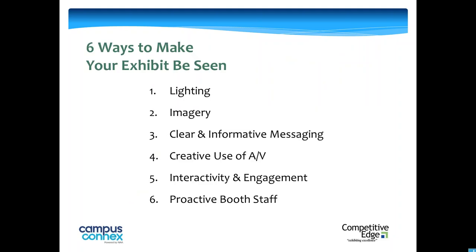So let's talk about getting seen — six ways to make sure your exhibit gets seen. Number one: light it up. Number two: pictures — a picture is worth a thousand words. Clear, informative messaging. Integrating audio visual. Something physical to do in the booth. And a proactive booth staff. These are the six ways to ensure your exhibit gets seen, because if they don't see it, they can't process it.